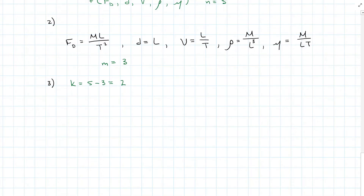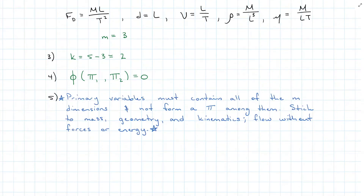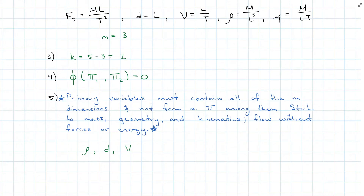Step five: select m dimensional variables to be the primary variables. Primary variables must contain all m dimensions and not form a pi equation themselves. Stick with variables that relate to mass, geometry, or kinematics. We have density for mass, diameter for geometry, and velocity for kinematics. That combination contains m's, l's, and t's, so all dimensions are covered with these three primary variables.